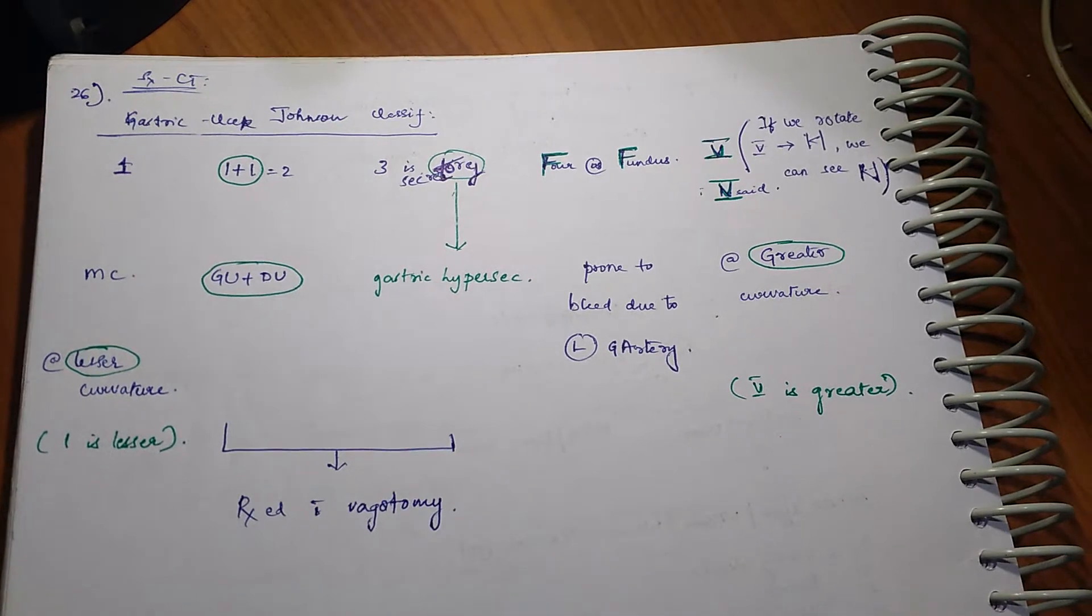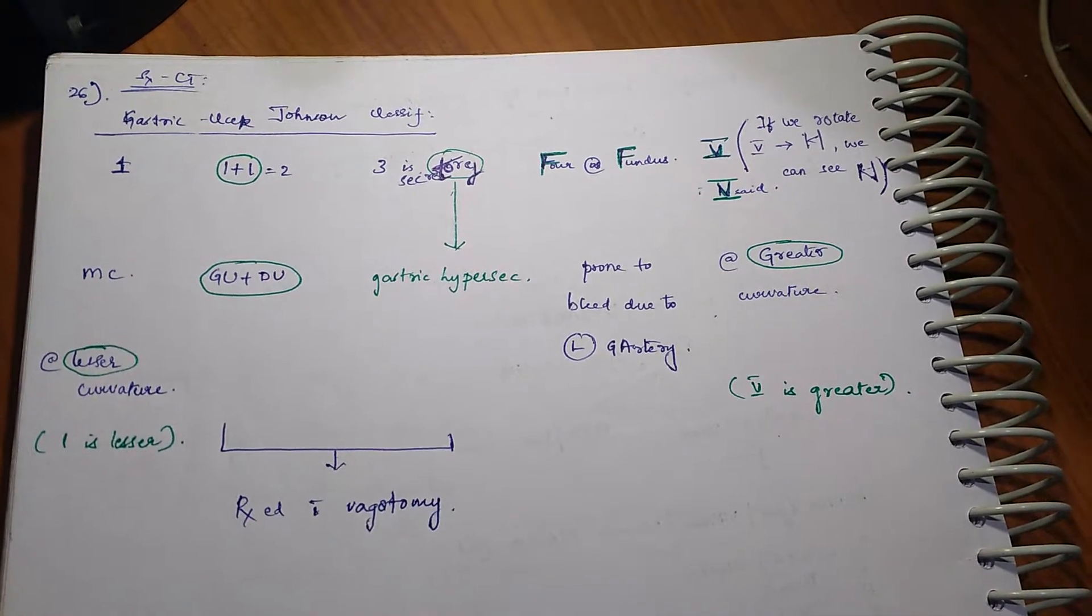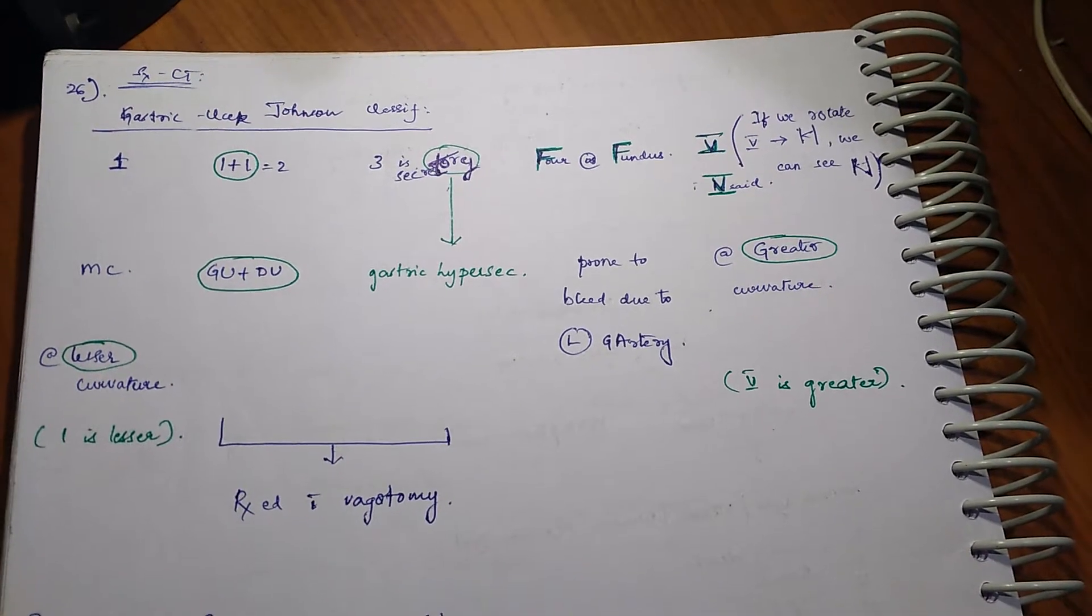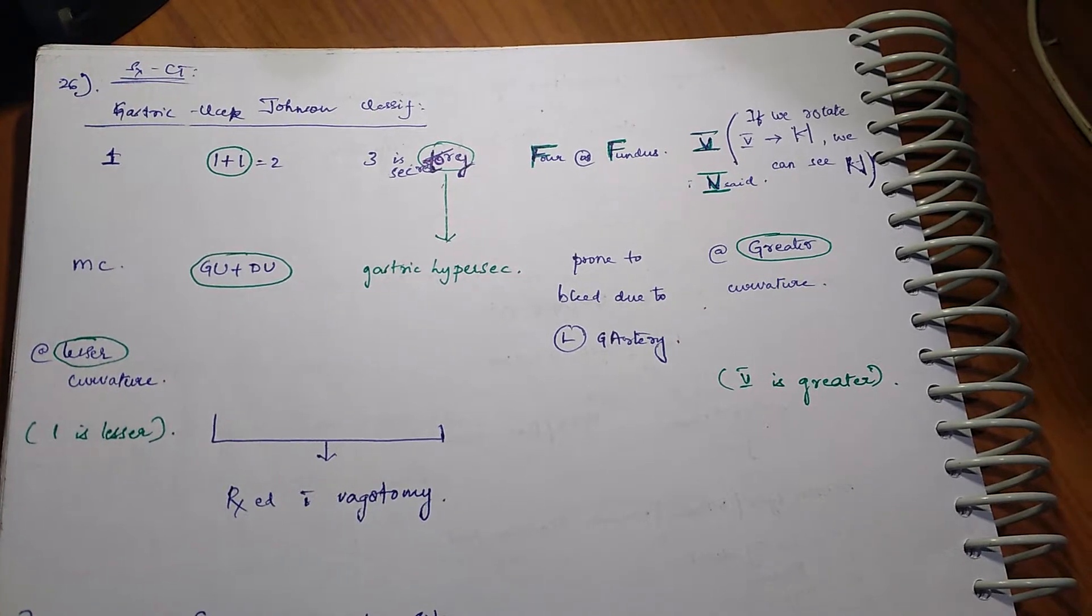Type 4 occurs at fundus, the common thing between them is the letter F. Also, it is prone to bleed due to left gastric artery.